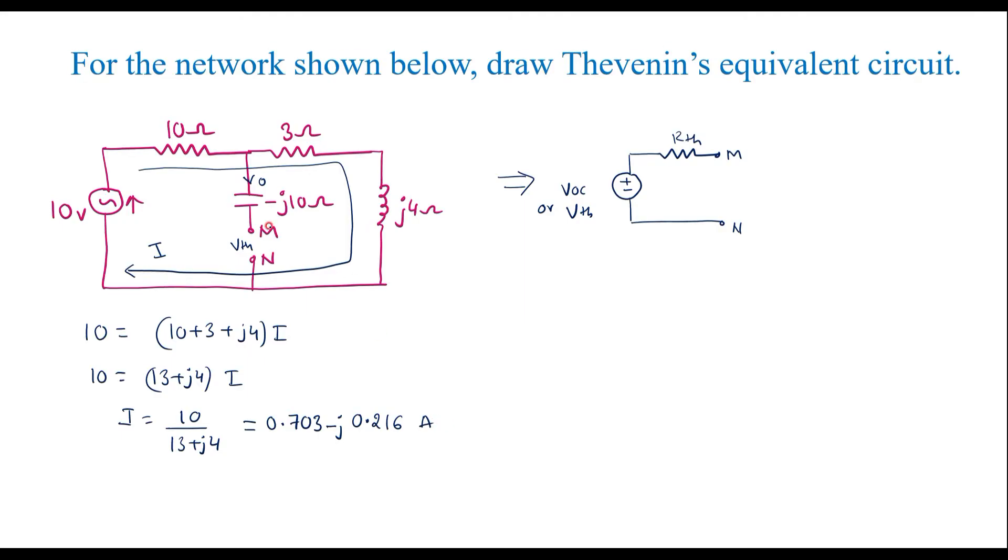Now here we can observe that the voltage between M and N or VTH is the voltage between 3 ohm resistor and J4 ohm resistor, because VTH is parallel to 3 ohm and J4. So voltage across these two terminals is nothing but voltage across 3 ohm plus J4 ohm.